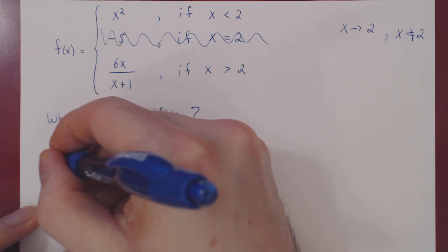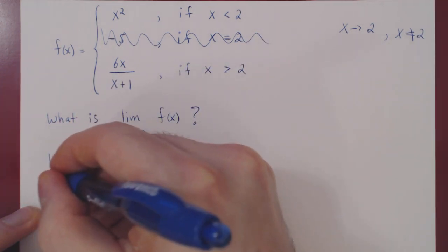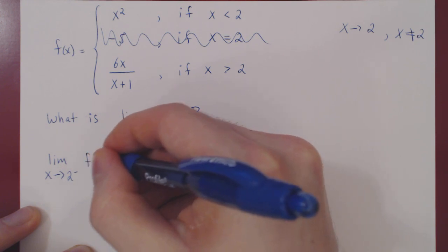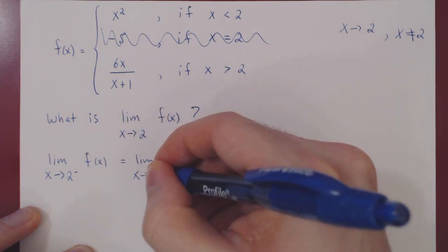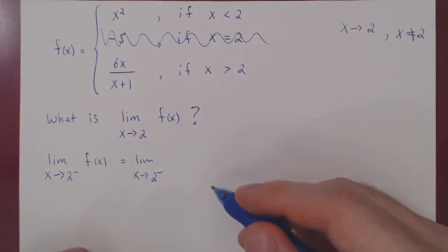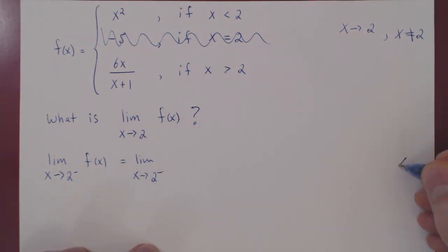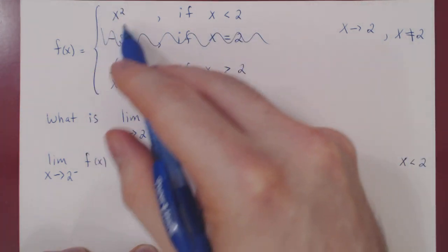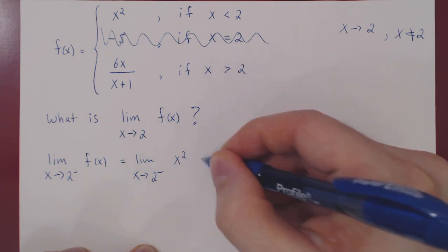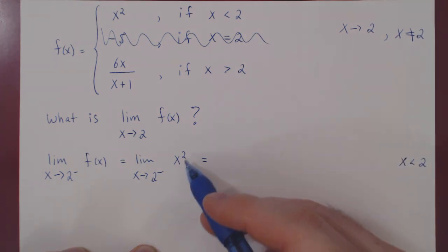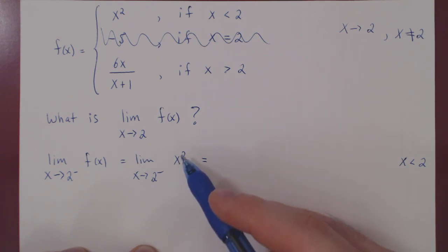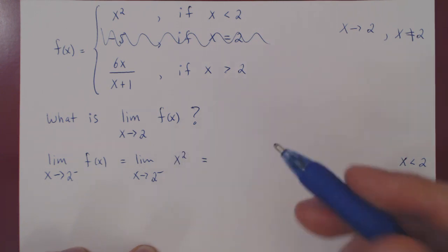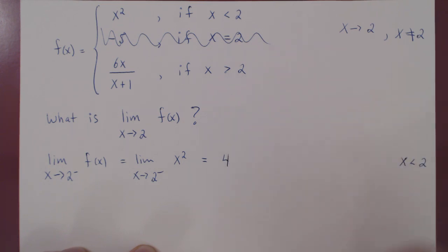Let's look at the limit from the left first — we let x approach 2 from the left-hand side. As x approaches 2 from the left, x is slightly smaller than 2, so we use f of x equals x squared. As x gets closer and closer to 2, x squared gets closer and closer to 2 squared, which is 4. So the limit from the left is 4.